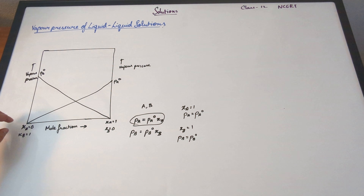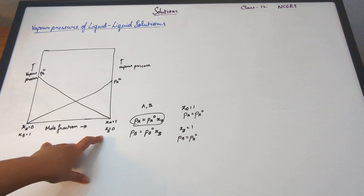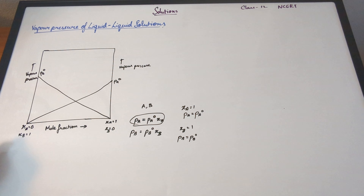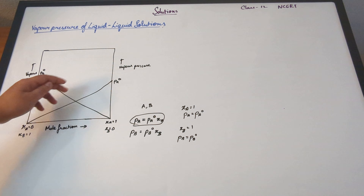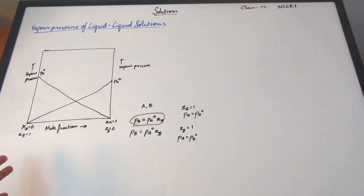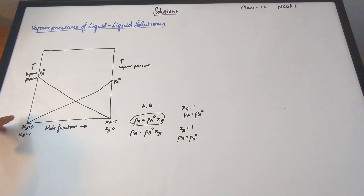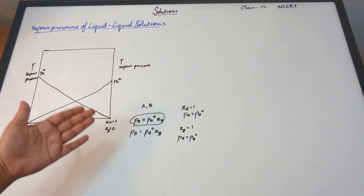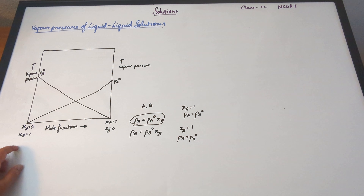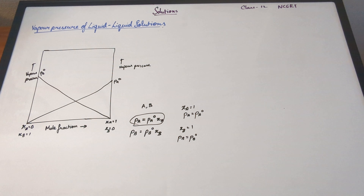Similarly, we can do the same thing for component B. If Xa equals 1, then Xb equals 0; and if Xa equals 0, then Xb equals 1. So when Xb equals 1, Pb will be equal to Pb0 — the vapor pressure of the pure component will equal the vapor pressure of the substance itself. So again, you will have another line and this vapor pressure will be equal to Pb0.